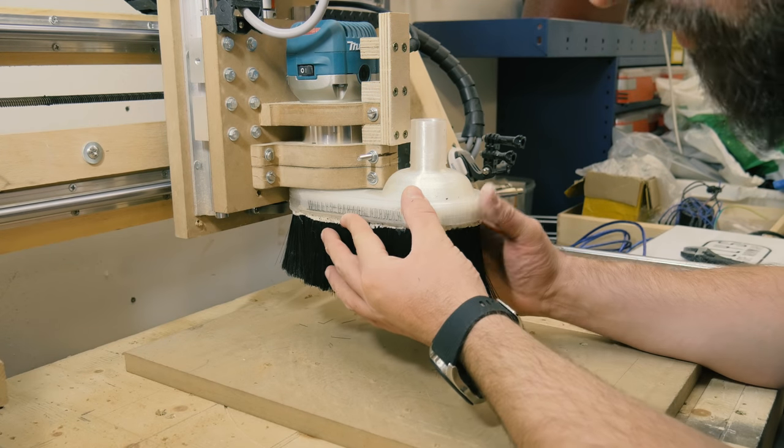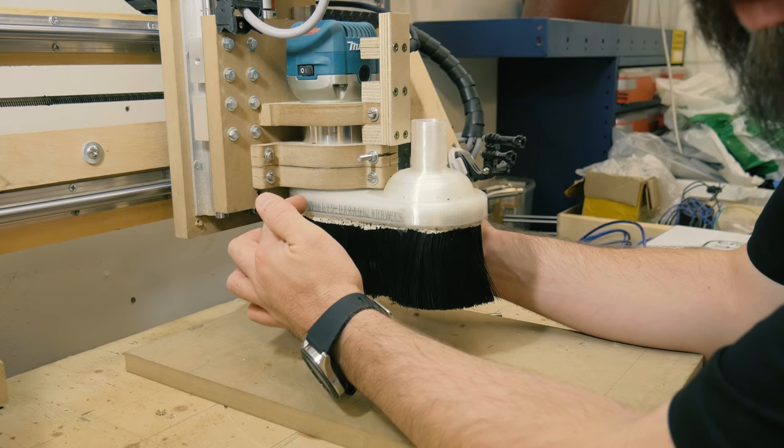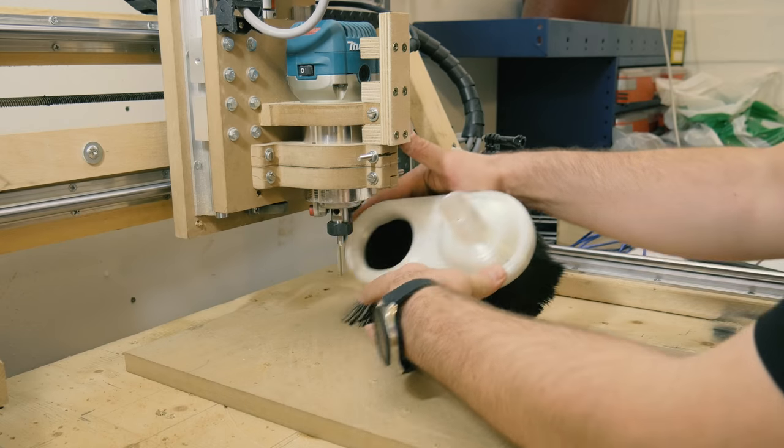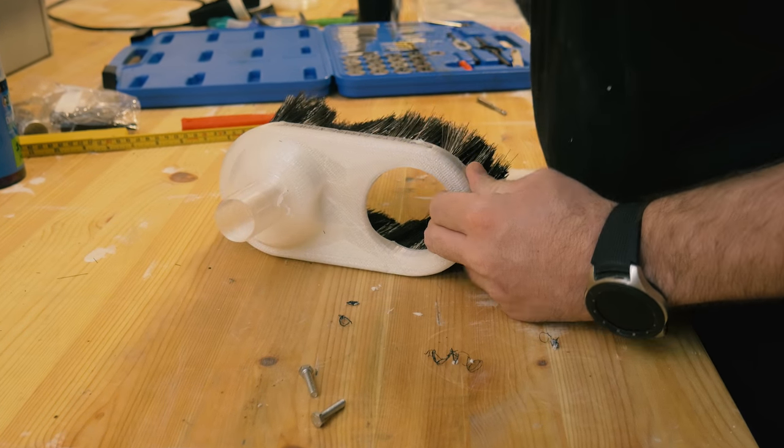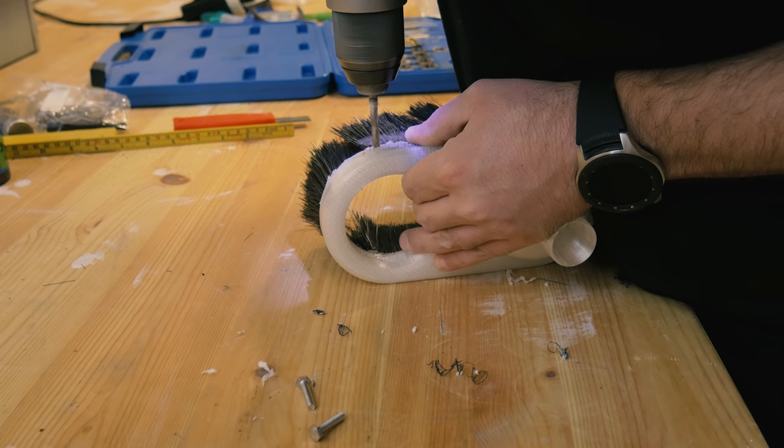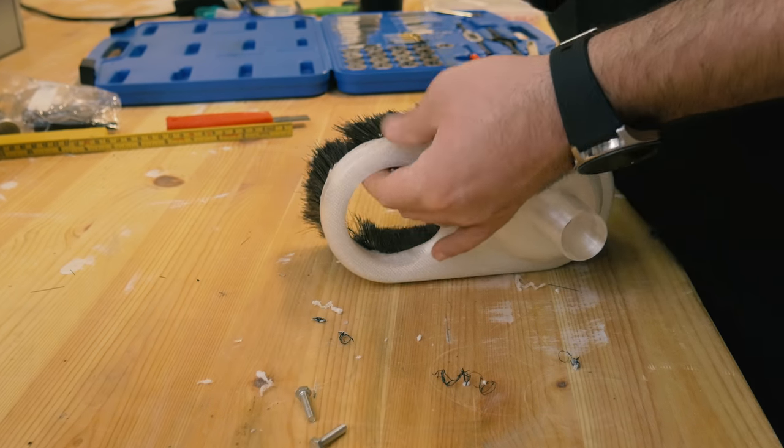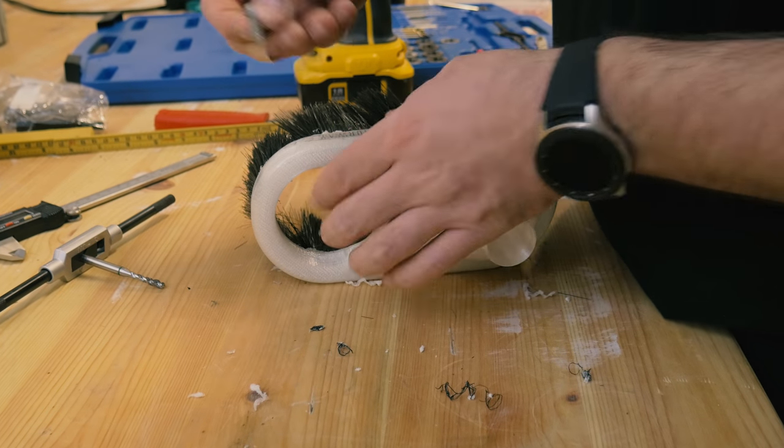The next thing I want to do is to make some set screws, one on each side here so I can attach the router to the dust shoe. I'm going to use the M6 bolts and I'm going to thread the holes with the bolt itself.